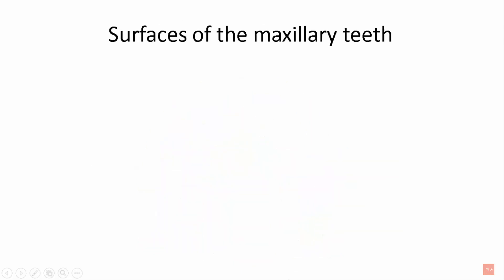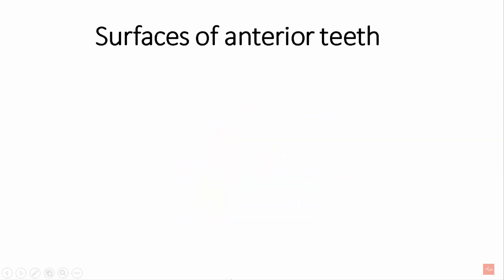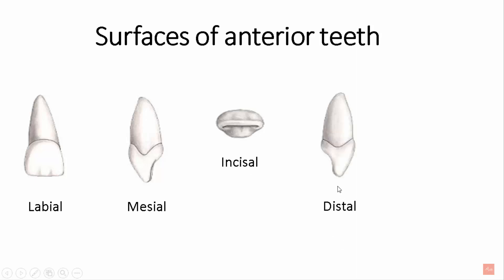Moving on to the surfaces of the maxillary teeth — the only difference here is the palate. So this is the labial surface, this is the buccal surface, and the surface facing the palate is known as the palatal surface. Now for the anterior teeth: the labial surface is the surface we see when a person smiles. The mesial surface is towards the midline, the incisal surface, the distal surface is away from the midline, and the lingual surface is towards the tongue.